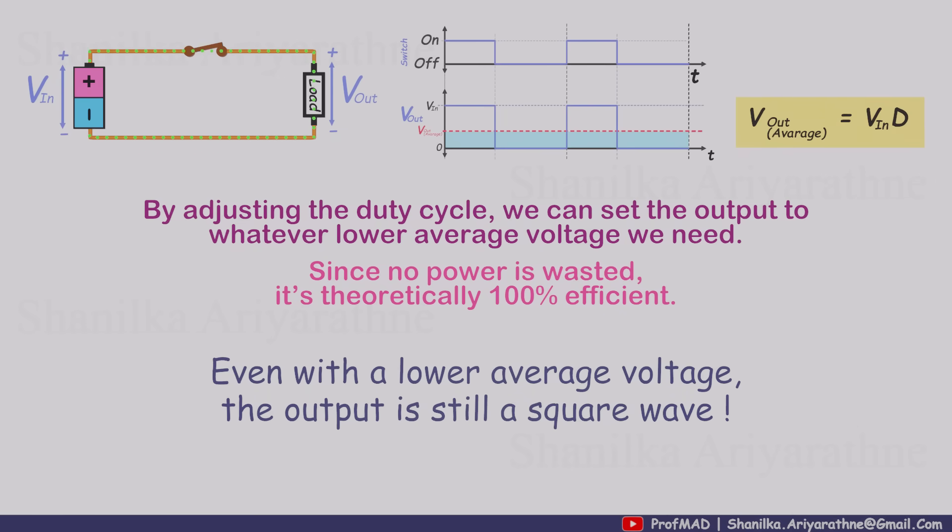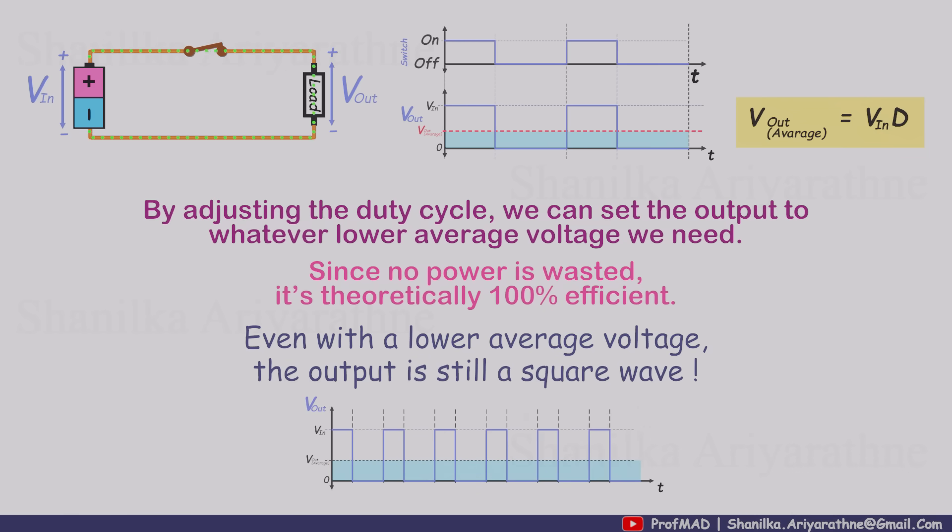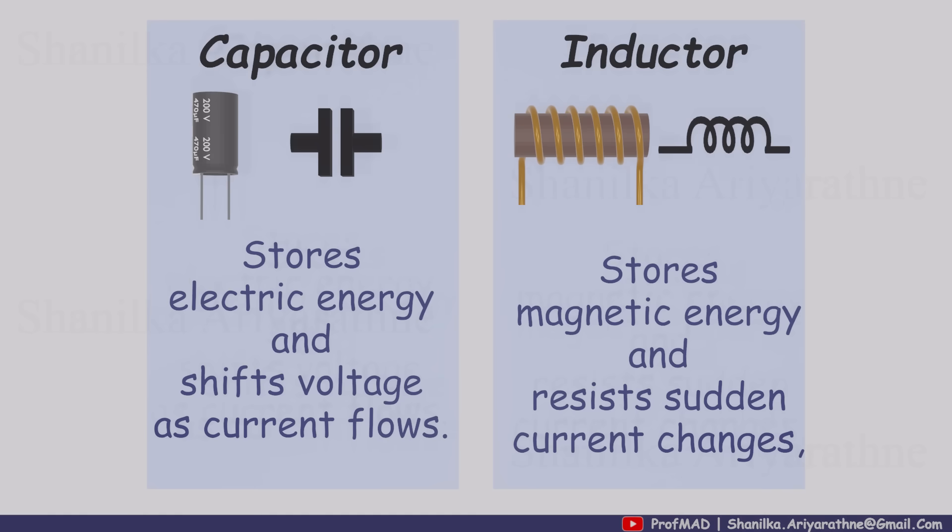But there's a catch. Even though the average voltage is lower, the actual output is still a square wave, not smooth DC. And if you feed that into a circuit that expects clean power, things can get unpredictable. To smooth out that square wave, we bring in two key components, a capacitor and an inductor.